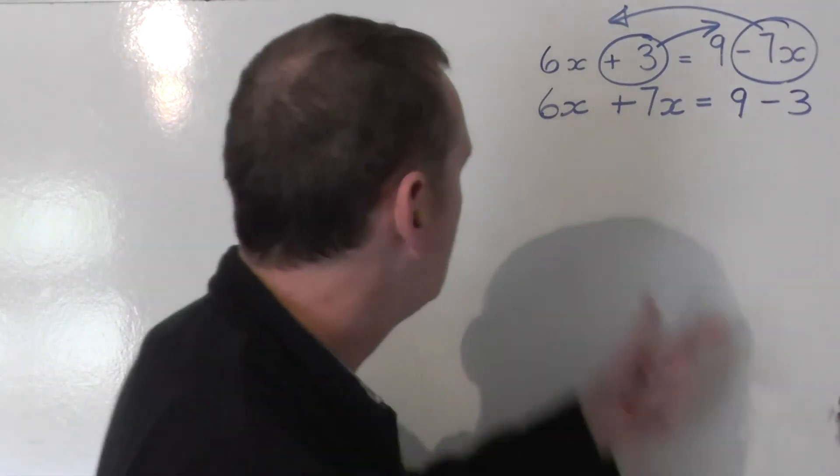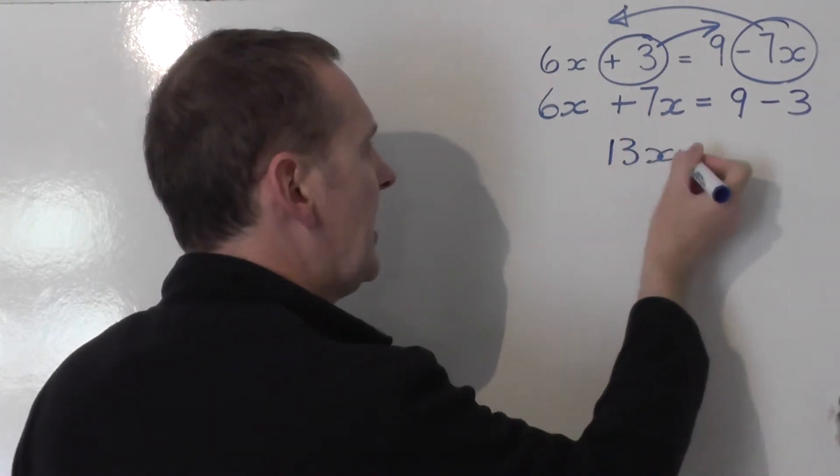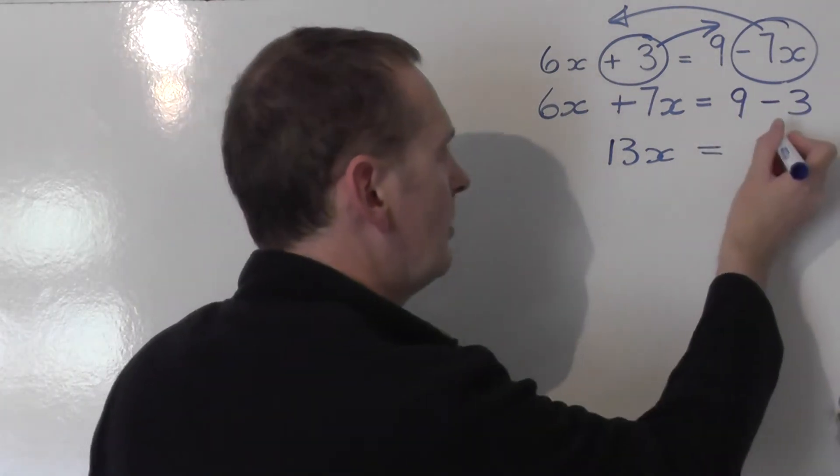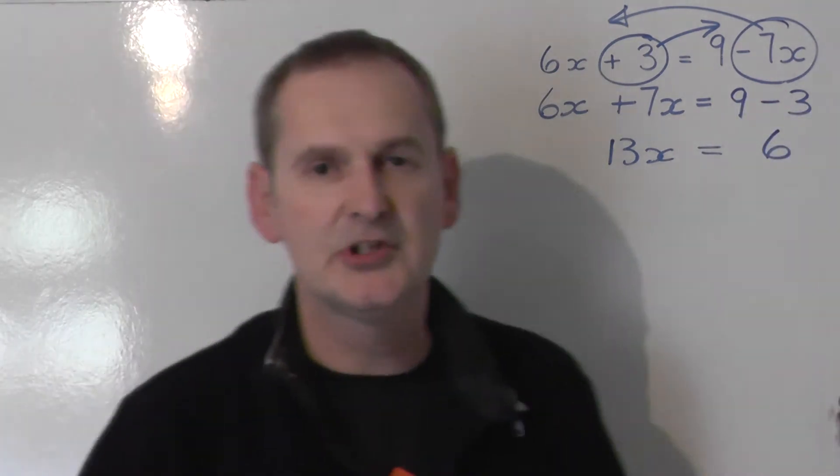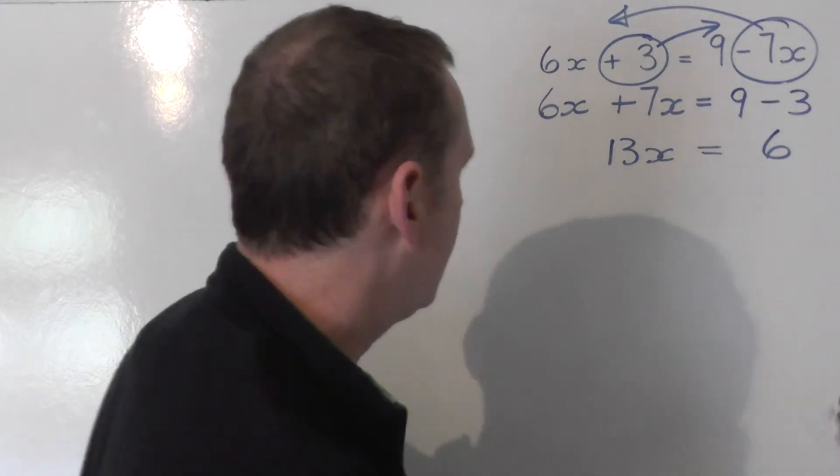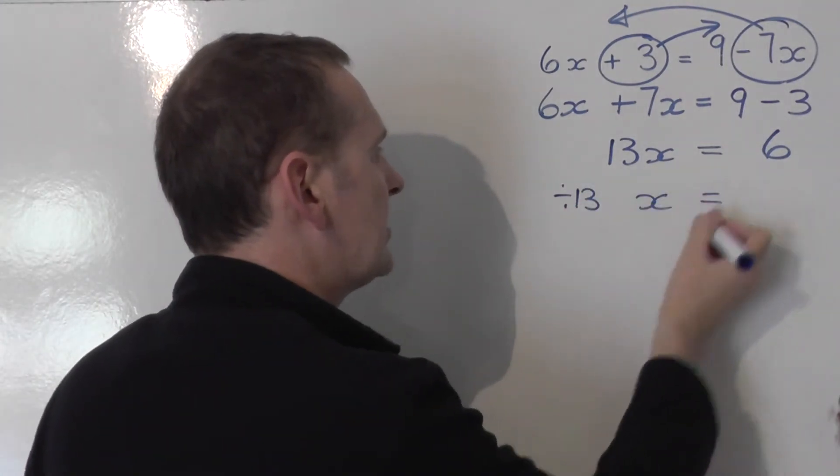Let's simplify things. We now add the 6x and the 7x together. You'll get 13x's. And you'll get 9 take away 3 on the right. Well, that's just 6. So 13x's are equal to 6. I don't want 13x, though. I want x.